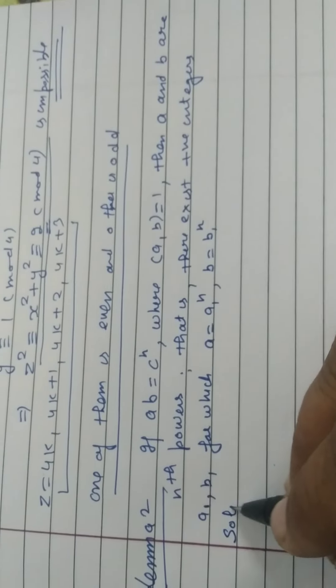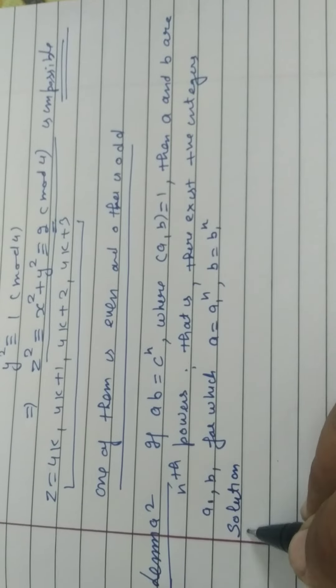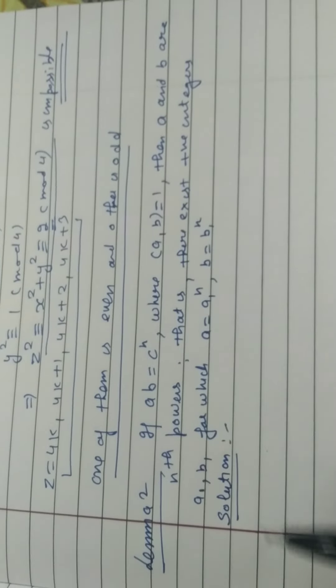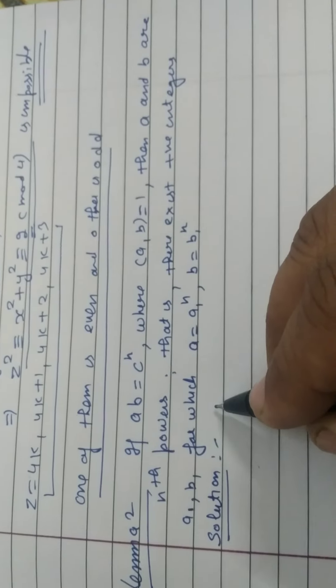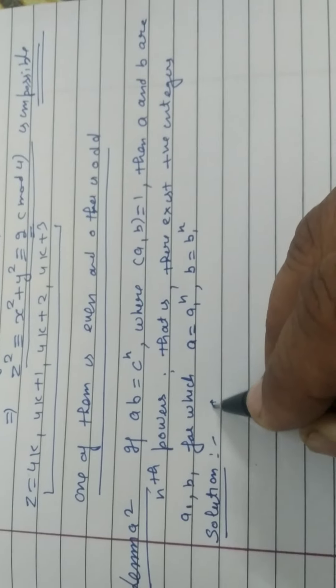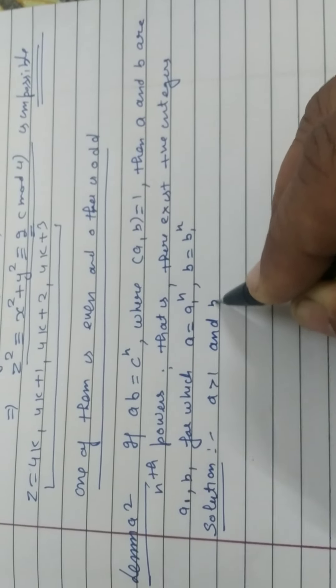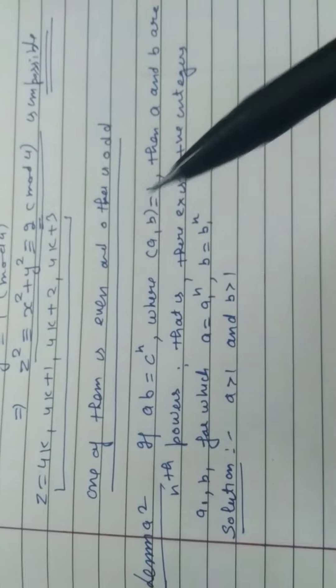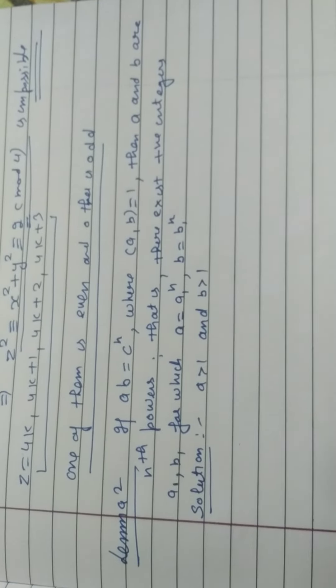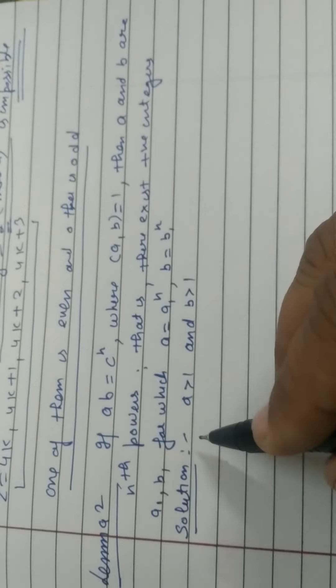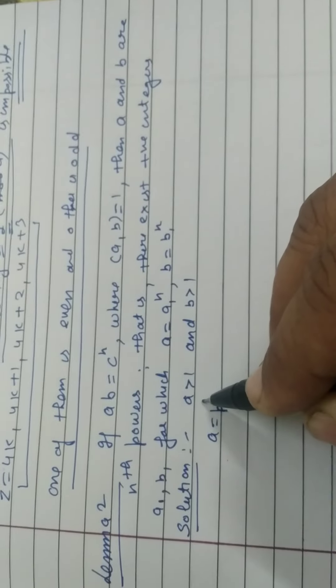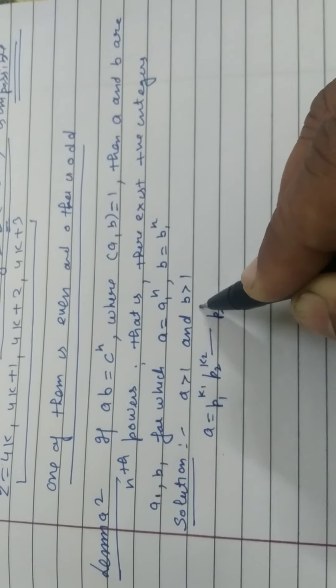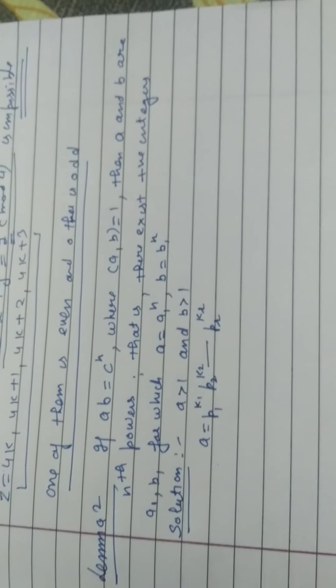Now solution. It is not harm to take A is greater than 1 and B is greater than 1. If A is equal to 1, then nothing to prove and B is equal to 1, then nothing to prove. So, A can be written as P1 to the power K1, P2 to the power K2, PR to the power KR, prime factorization of A.